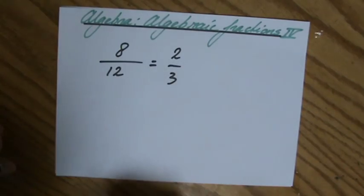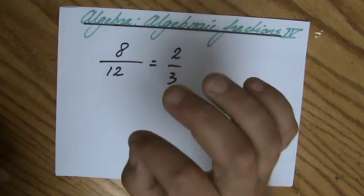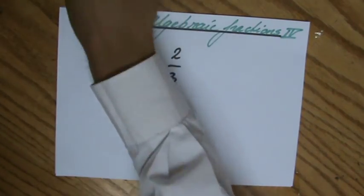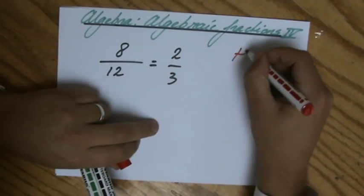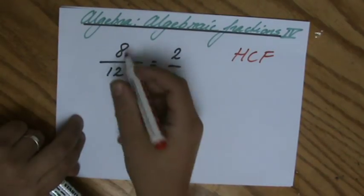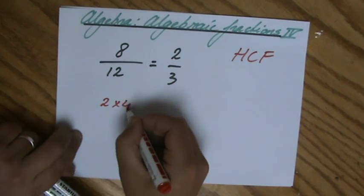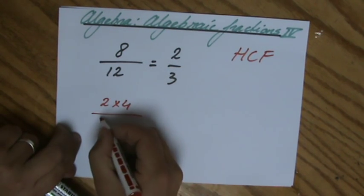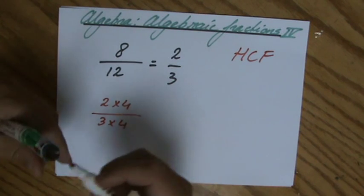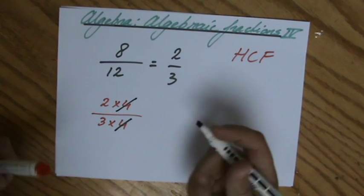Why does it simplify to 2 over 3? Because you took out, and that is important, you took out the highest common factor. That is what simplifying is all about. Because 8 is actually 2 times 4, and 12 you can also write as 3 times 4. And then by taking out the highest common factor, you'll be left with 2 over 3.